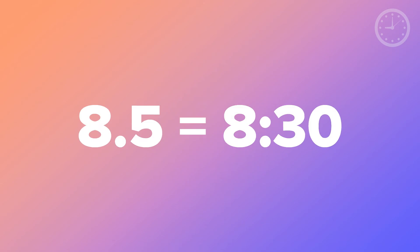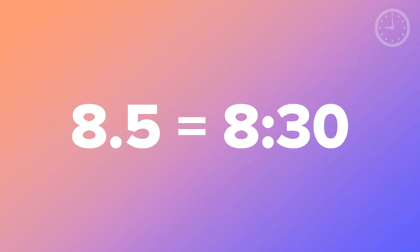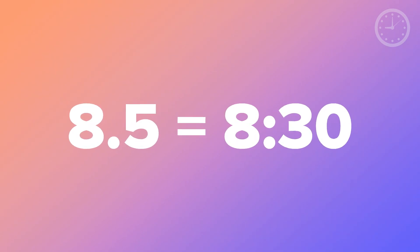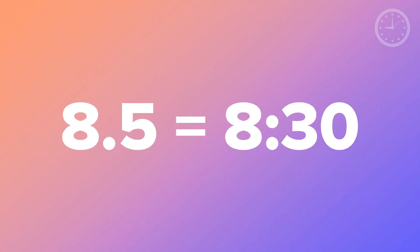For example, if you saw that half of the pie was shaded, you'll know that's 30 minutes, and you can easily see that 8.5 is 8 hours and 30 minutes. You can use that for any type of time.